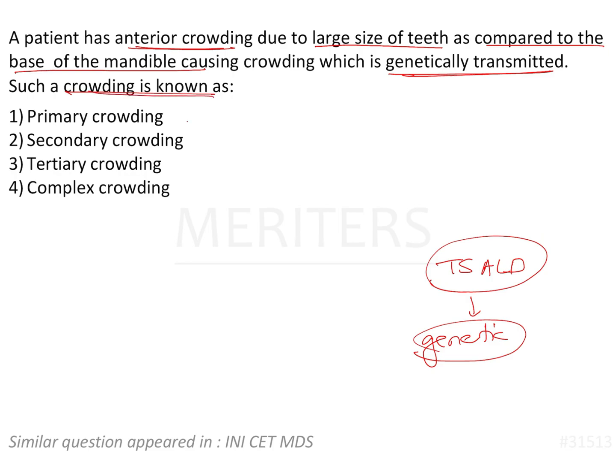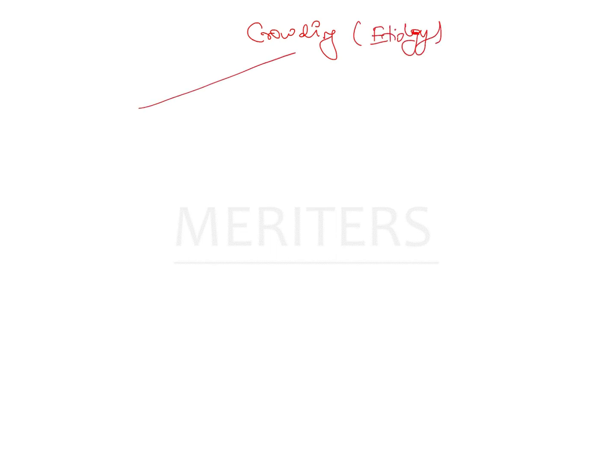This type of crowding is known as primary crowding, secondary crowding, or tertiary crowding. Crowding can be classified into three types on the basis of its etiology: primary crowding, secondary crowding, or tertiary crowding.